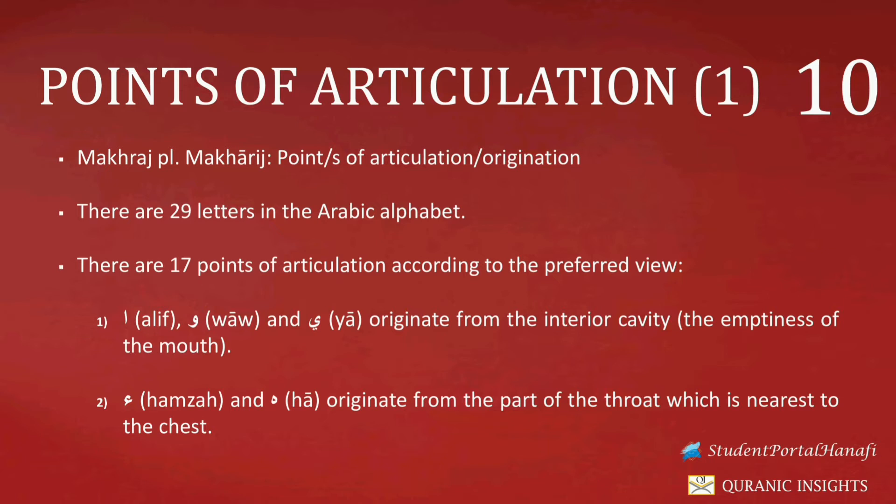The third letter is Ya Madda. Ya Madda refers to that instance in which we find a Ya sakinah with a kasra prior to it. An example from the glorious Qur'an: we have the word Fi'lun — Fa, Ya, Lam. The second letter within this word is Ya, and it has a sukoon above it, making it a Ya sakinah. Prior to it, we have a kasra beneath the Fa. Therefore, this Ya will be referred to as Ya Madda.